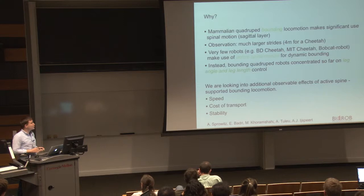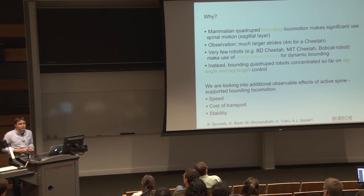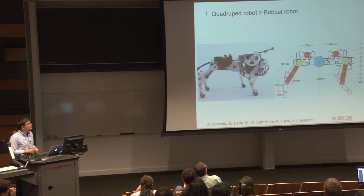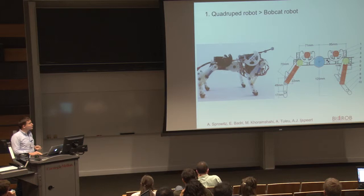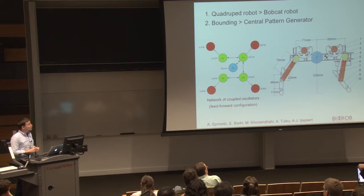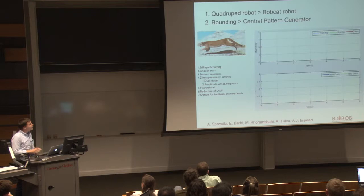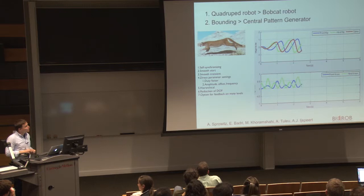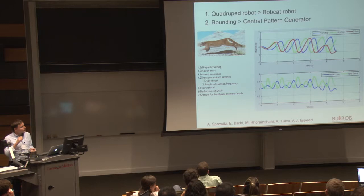We implement coupled oscillators and can at any point alter all the parameters. We get all the advantages of central pattern generators: self-synchronizing, smooth starts, and the transients can be smooth or non-smooth depending on what you like. Especially important for our robot is that we can set all parameters directly — amplitudes, duty factors, and frequencies. For the standard robot without a spine, we connect each of those oscillator nodes to the legs, but we added one oscillator node into the spine controlling an additional RC servo motor.